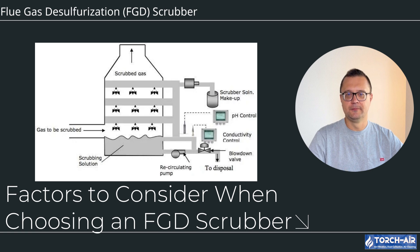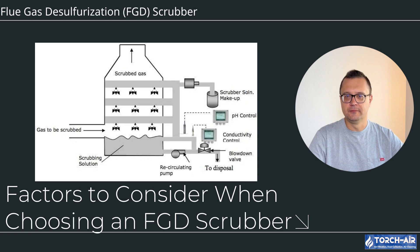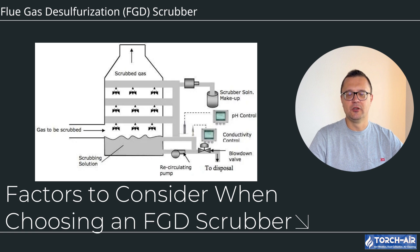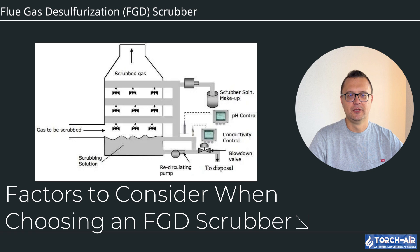Factors to consider when choosing an FGD scrubber: First, measure the total flue gas volume produced to ensure the system can handle the load — capacities are usually measured in cubic feet per minute (CFM). Second, determine the SO2 concentration in the flue gas, as higher concentrations will require more robust scrubbing systems. Third, consider water availability — if water is a limiting factor, dry scrubbers might be the best choice, however wet scrubbers are more efficient in terms of SO2 capture.